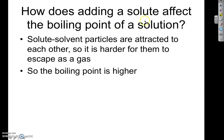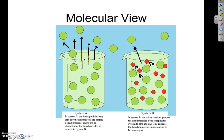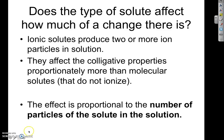Boiling point is also affected by adding a solute, with similar reasoning as vapor pressure lowering. The solvent and solute interact and are attracted to each other, so fewer solvent particles escape as gas. You have to add more and more energy to overcome that solute-solvent attraction, so the temperature must be higher — meaning the boiling point is elevated. The molecular picture shows solute molecules attracted to solvent, so fewer solvent particles escape into the gas phase.